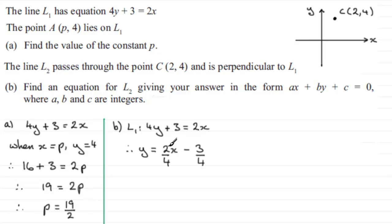And so I can see that the gradient of L1 is going to be a half and it crosses the Y axis when X is naught at minus 3 quarters. So I've got a line L1 looking something like this. Okay that's my line L1. Just label it like that.